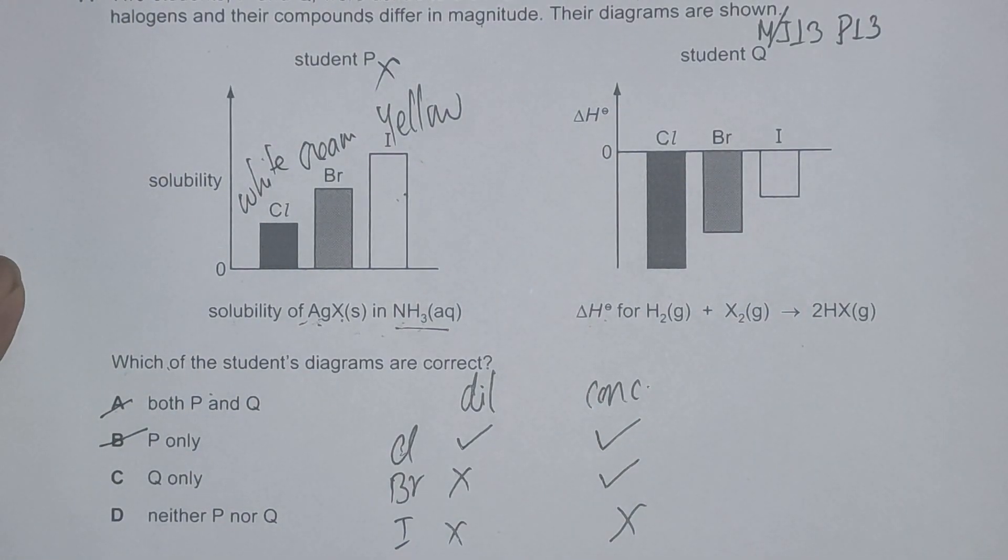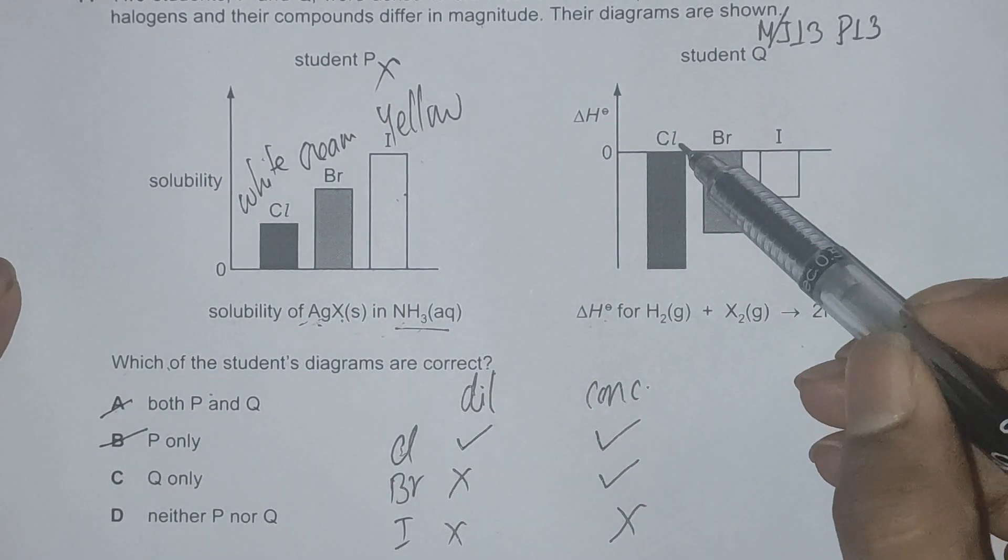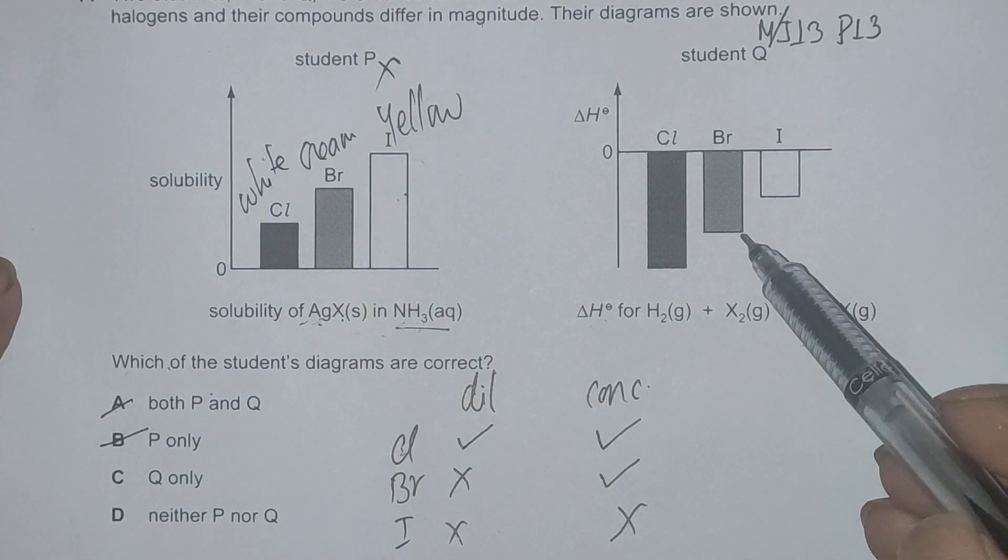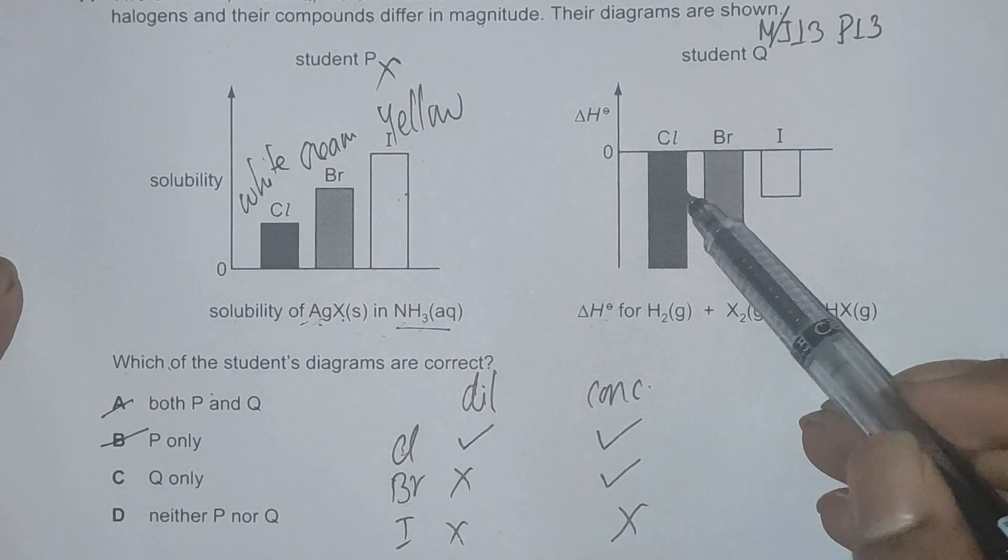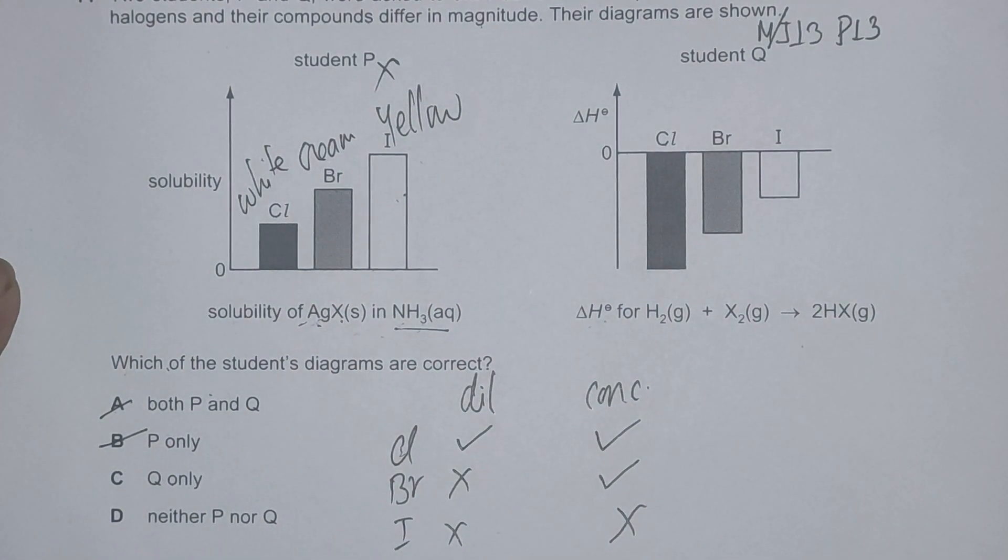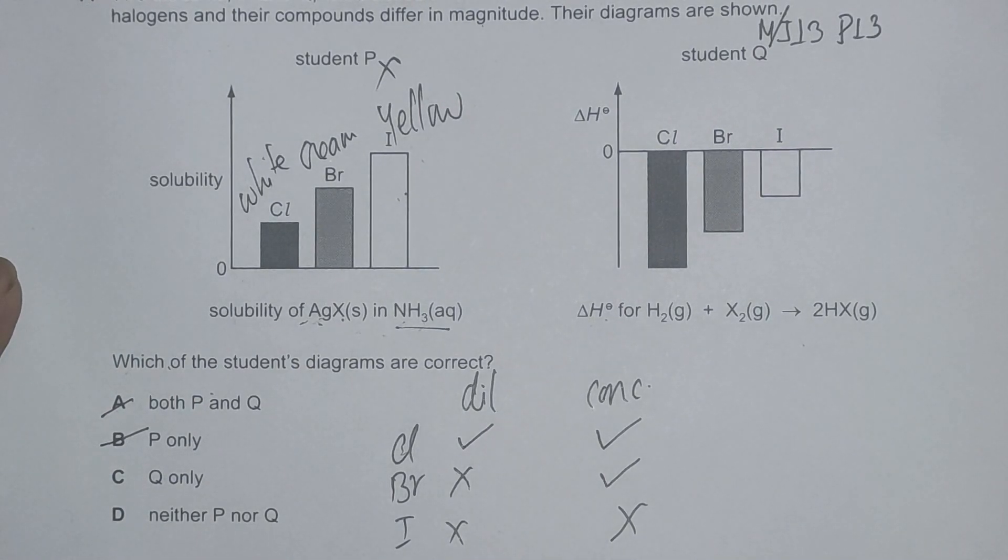Now checking for student Q. Student Q suggests the enthalpy change of halogens with hydrogen increases while going down the group. Increase for student Q means it becomes more endothermic while we go down the group.